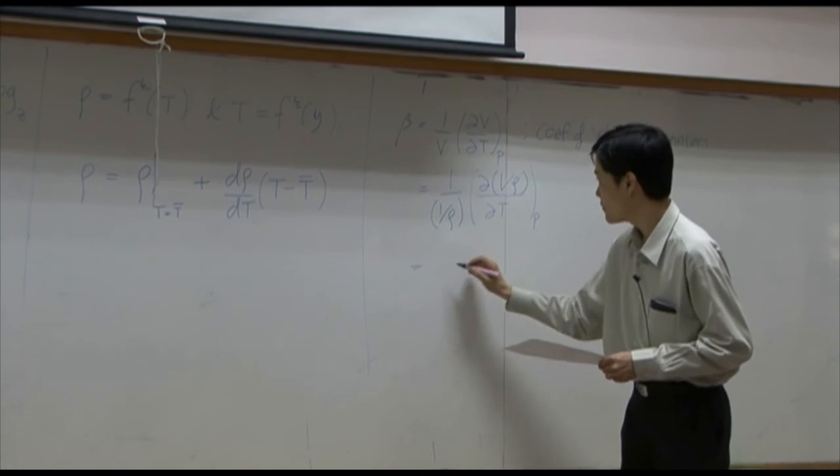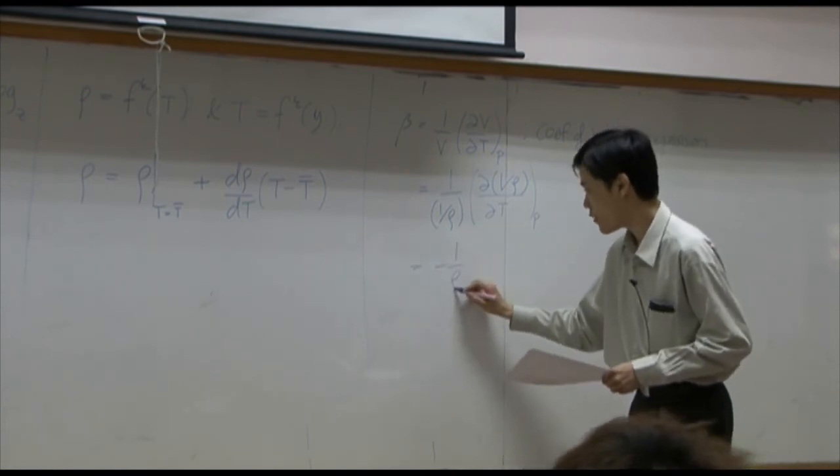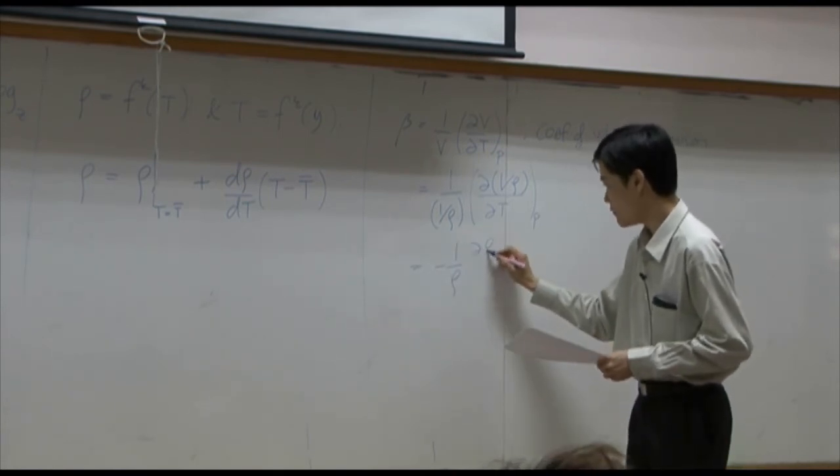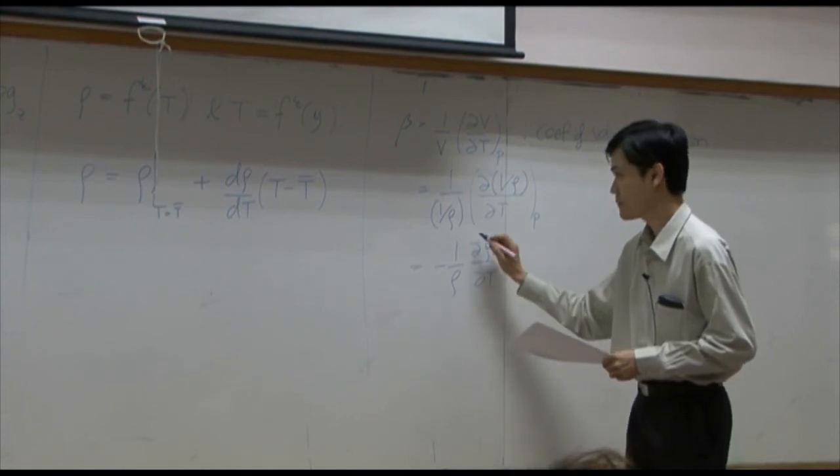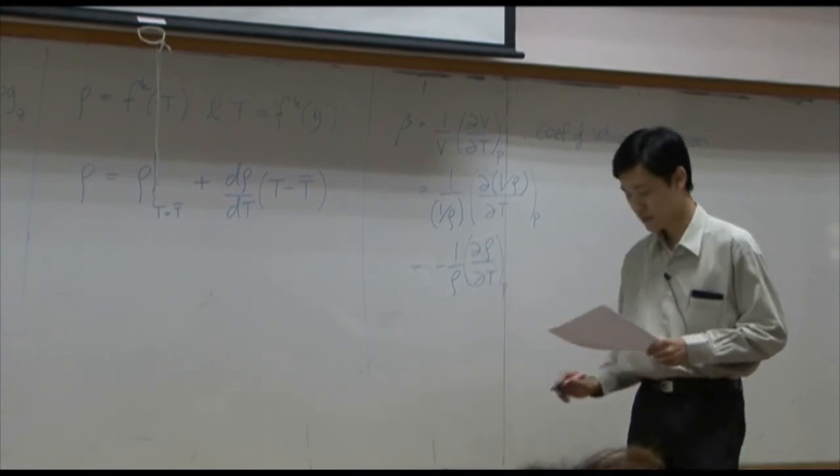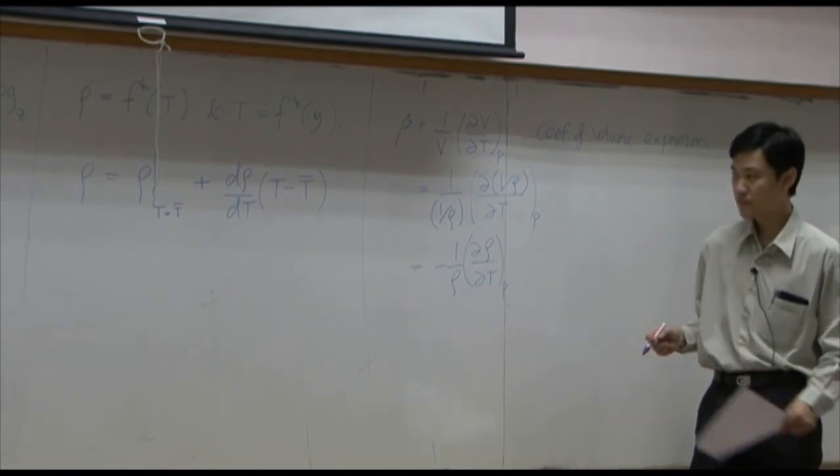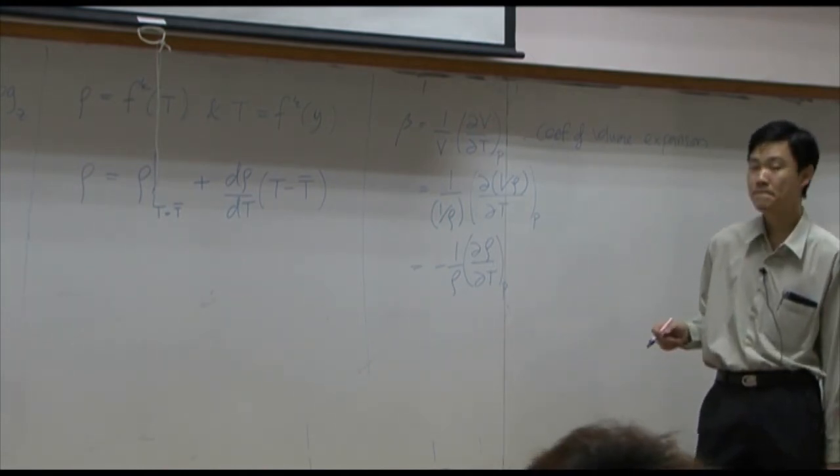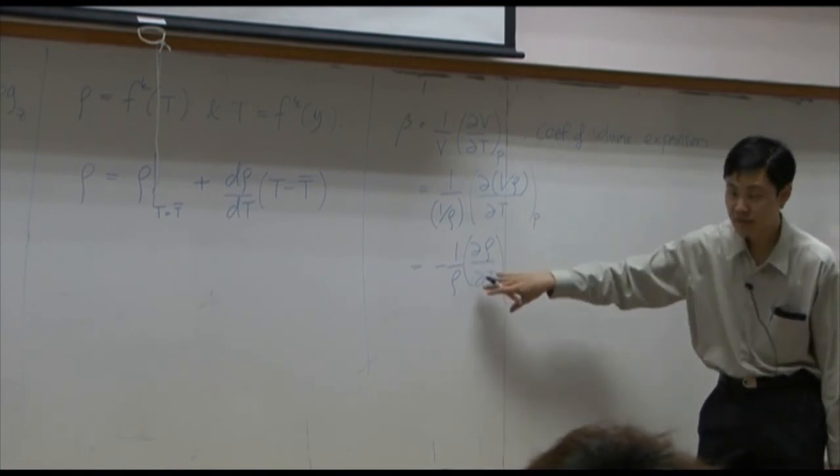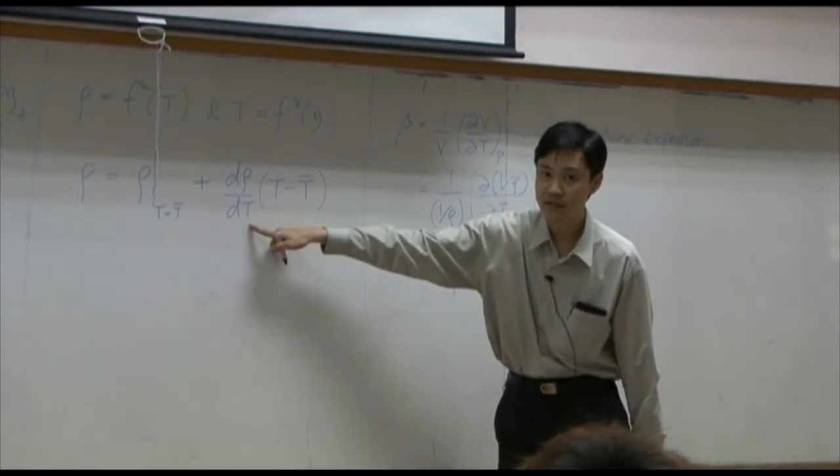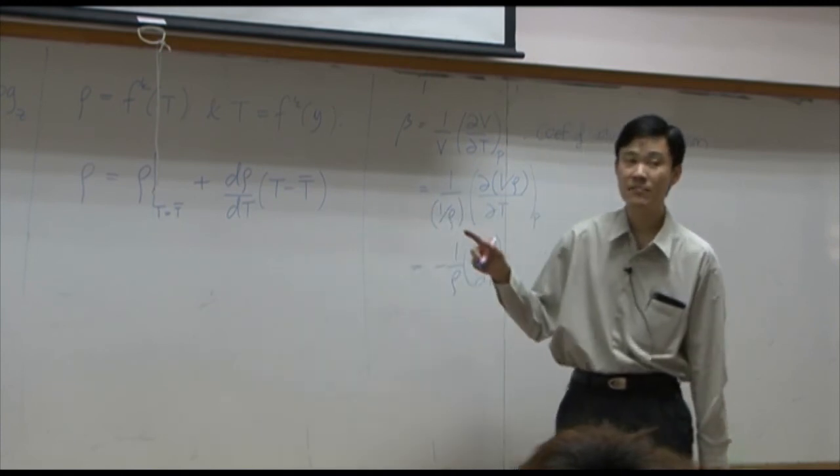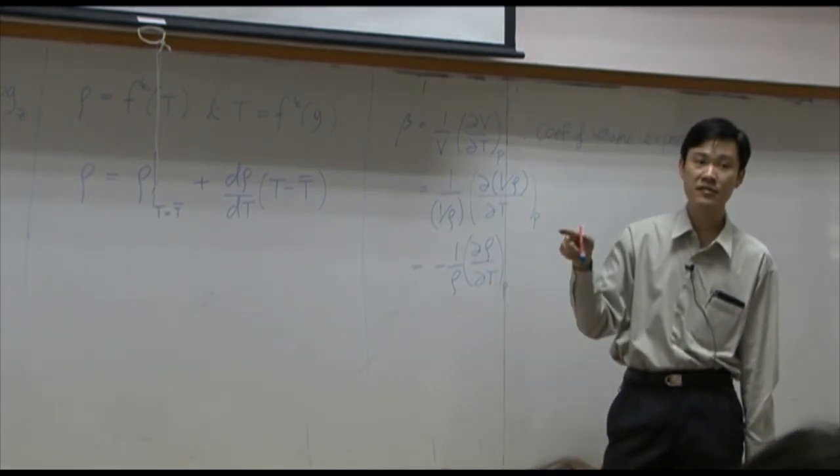is equal to minus 1 over rho, d rho by dt, at pressure constant. This term is the same as this term. Of course, under assumption that the pressure in our system is constant.